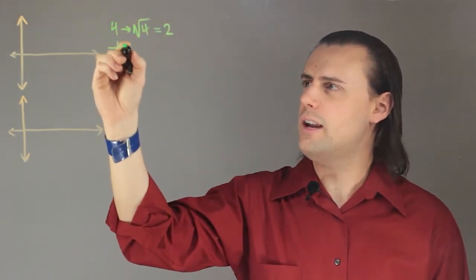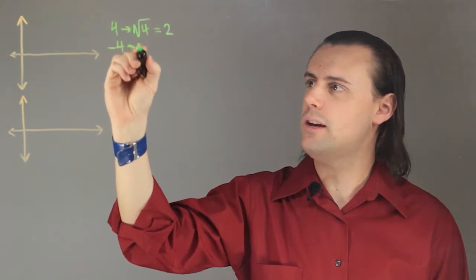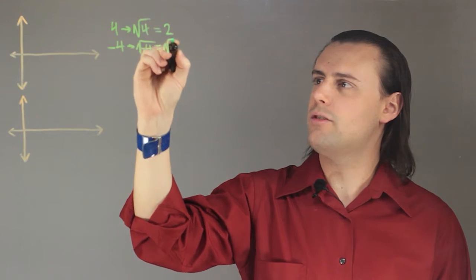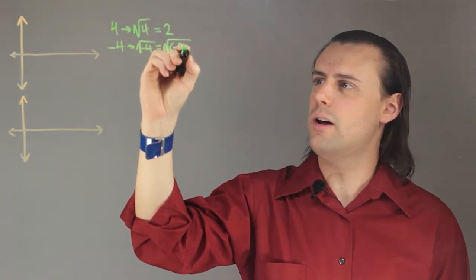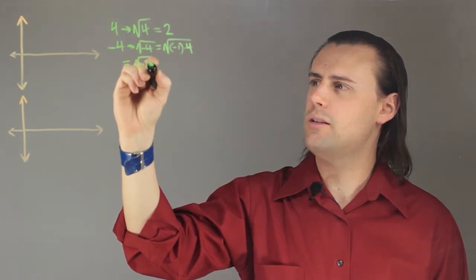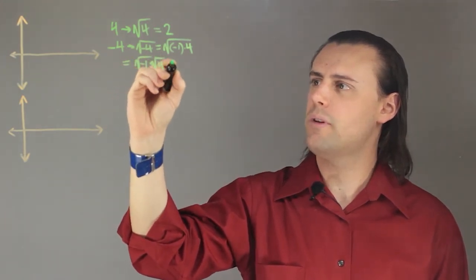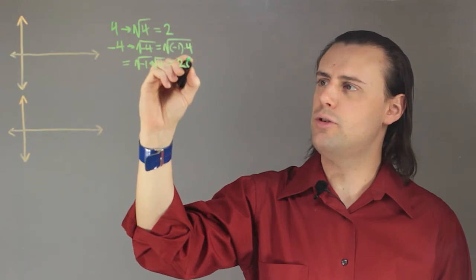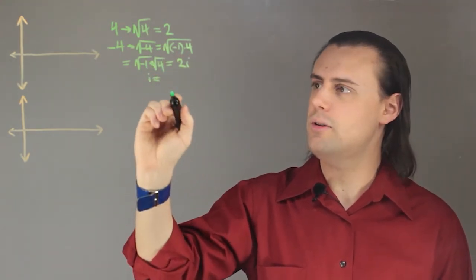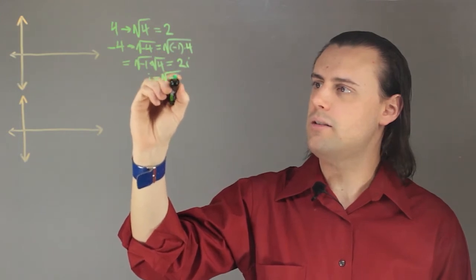If we consider negative 4, however, and we try to take the square root of that number, then we get the square root of negative 1 times 4, which is equal to the square root of negative 1 times the square root of 4, which is going to be equal to 2i, because i is the imaginary unit number, and it's defined as the square root of negative 1.